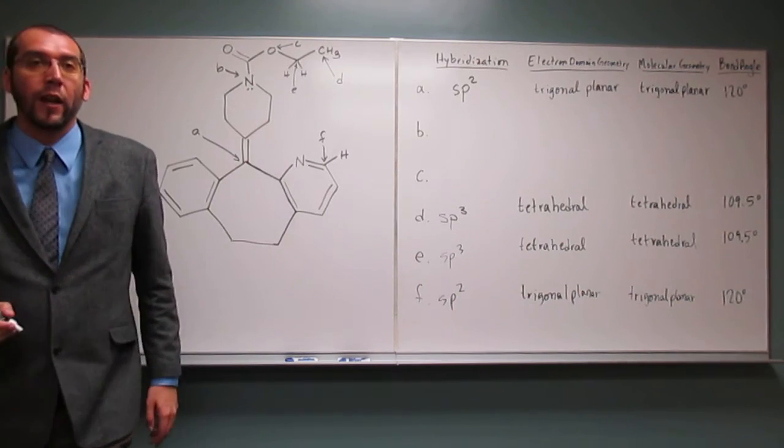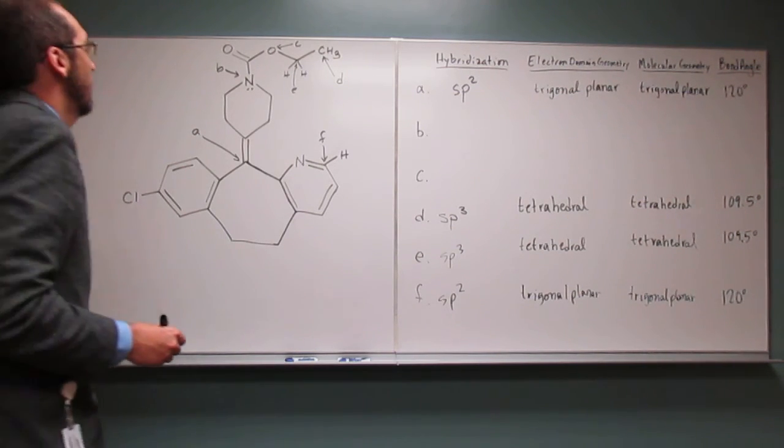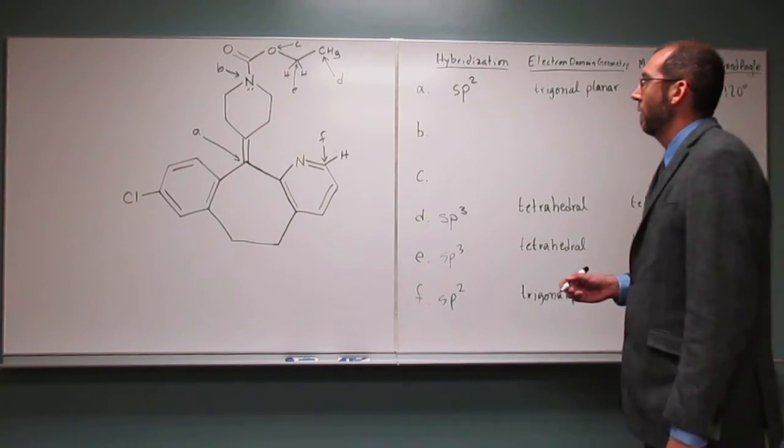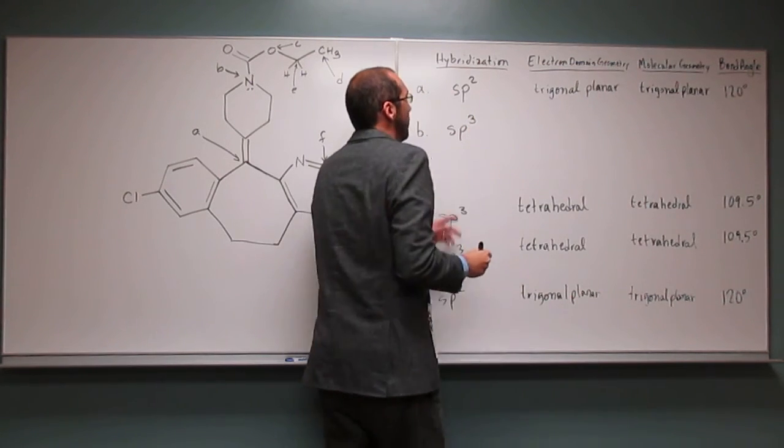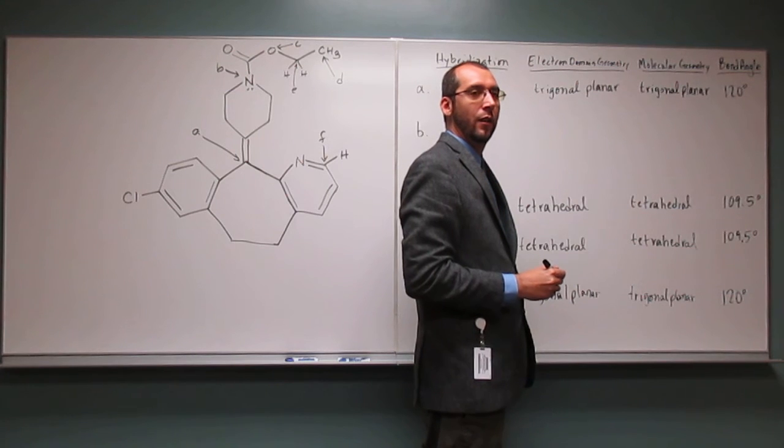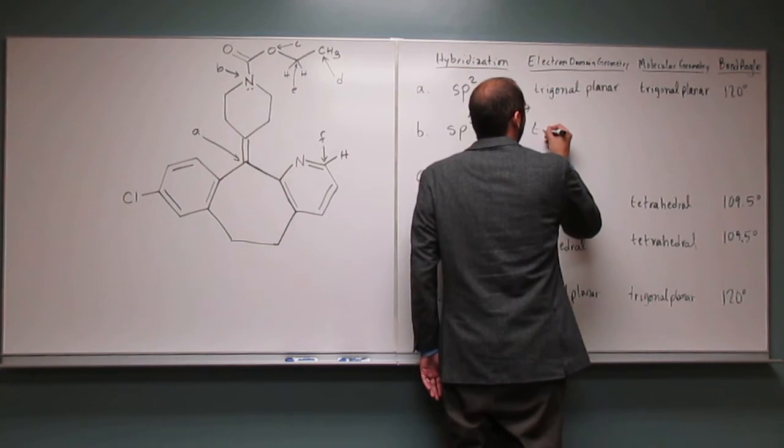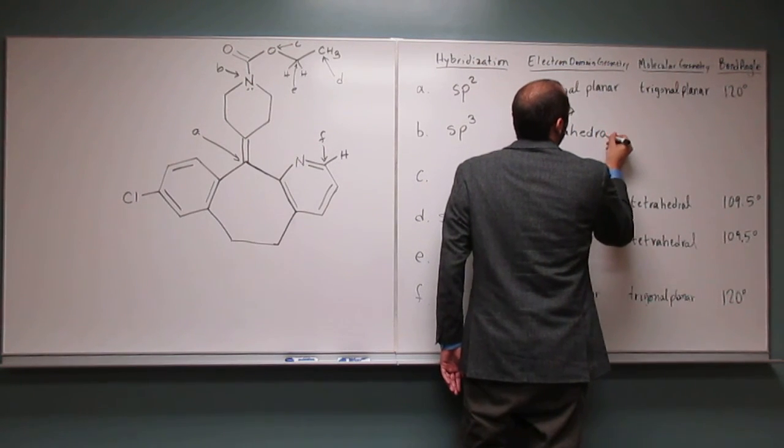And now we can determine how many electron groups very easily, right? How many electron groups do we have? Four. Four of them. So what would the hybridization be then? SP3. SP3. Very good. So since it's SP3, what's the electronic domain geometry? Tetrahedral. Tetrahedral. Okay.